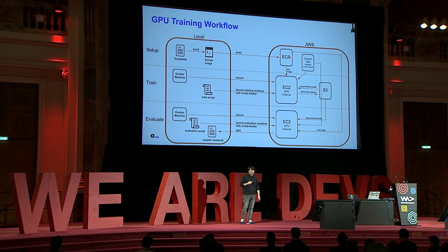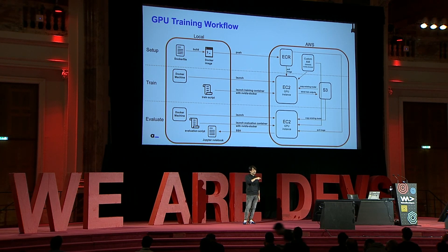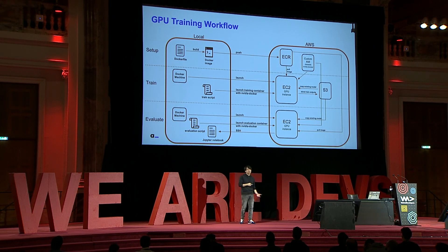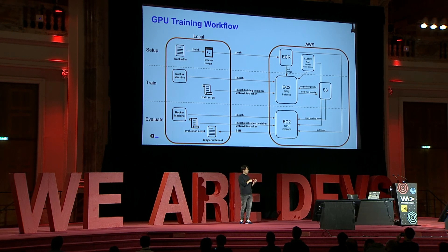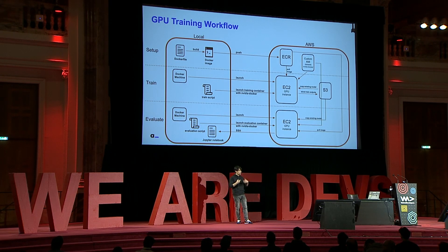Here is our GPU training workflow. We use AWS: a Docker file, Docker image pushed to ECR, then Docker Machine to spin up our cluster using P2 and P3 instances. After training, the model is stored to S3, and for evaluation we plug in a Jupyter notebook.